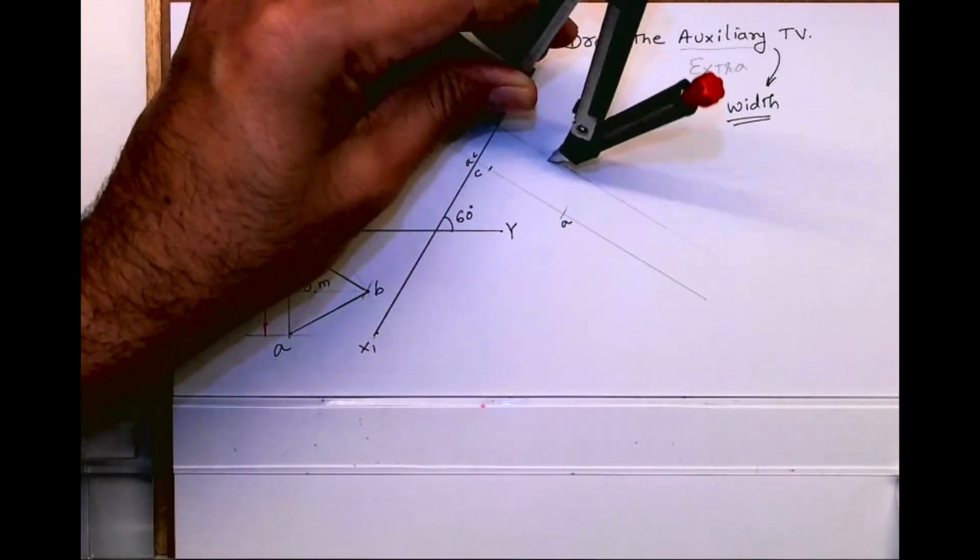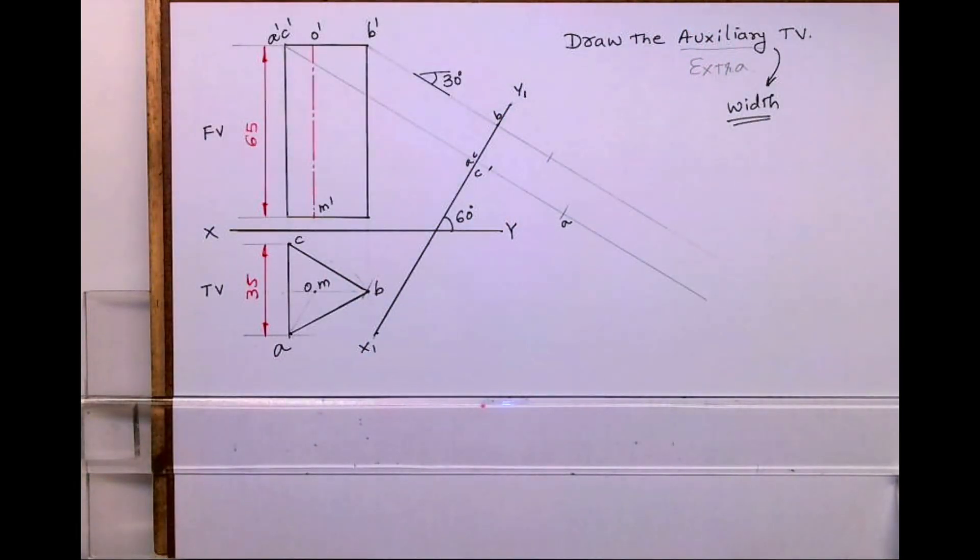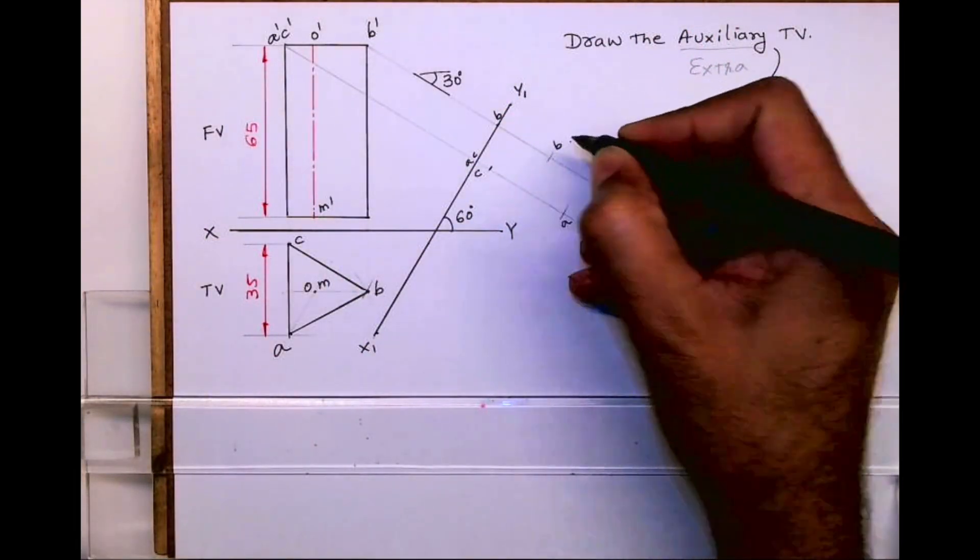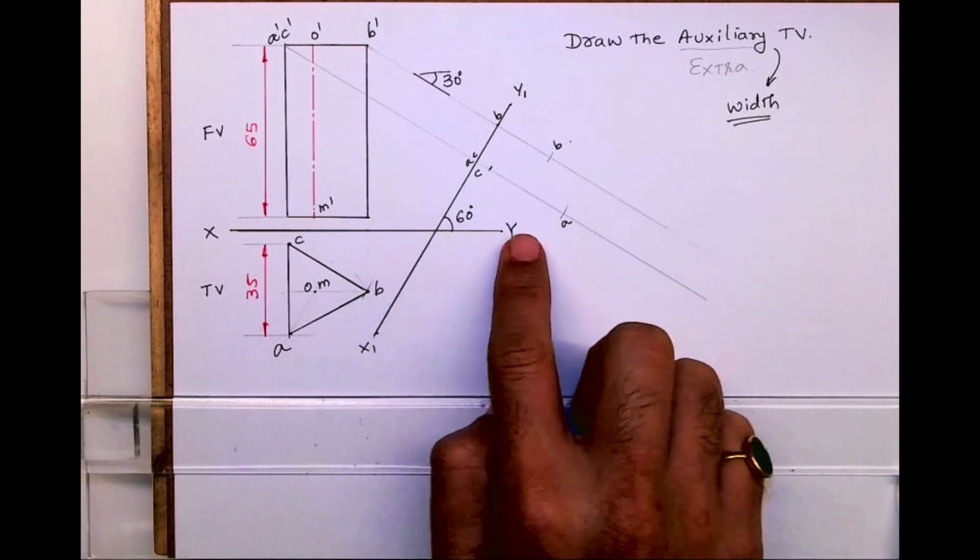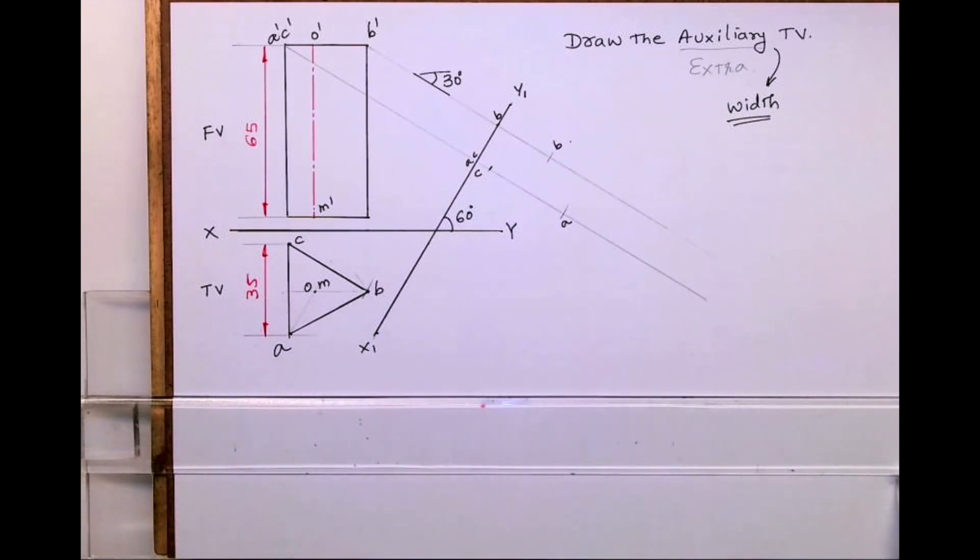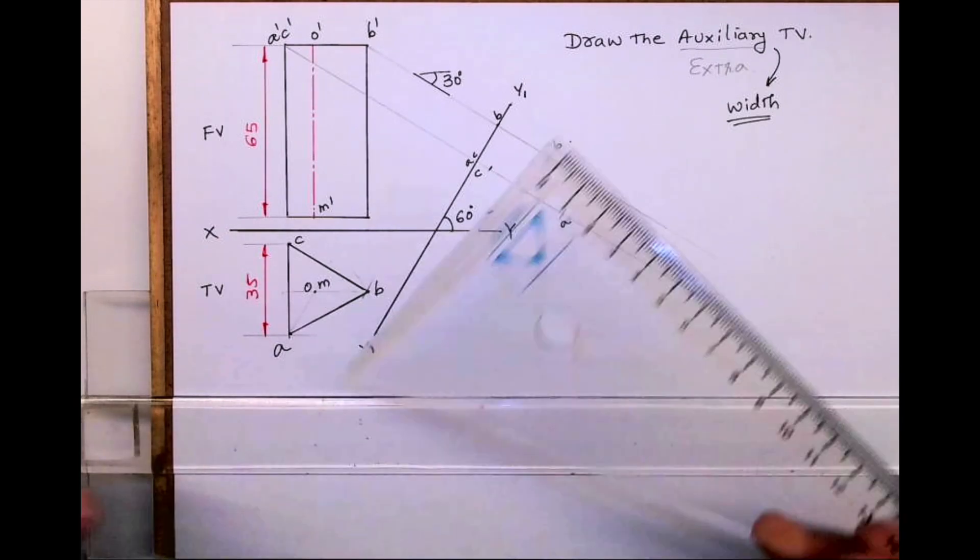So we got ABC, top portion. Now ignore that Y because I have done it with pen. So I can't erase that.